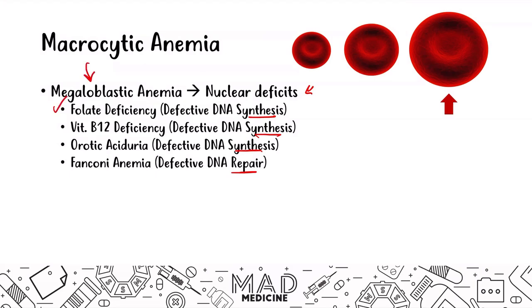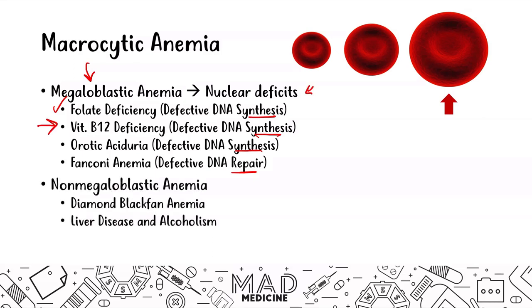We have already talked about folate deficiency — you can watch that video on the playlist. Today we're discussing vitamin B12, and we'll continue with lectures on orotic aciduria and Fanconi anemia in upcoming lectures. These are the megaloblastic anemias. Then you have non-megaloblastic anemias like Diamond-Blackfan anemia, liver disease, and alcoholism, which contribute to macrocytic anemia but not due to nuclear deficits.